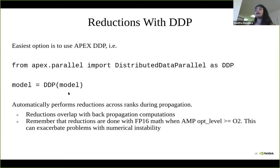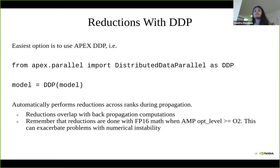DDP in the background overlaps reductions with backward propagation, improving GPU utilization. It also does FP16 reductions if you've activated AMP — instead of porting gradients to FP32 for all-reduce and back to FP16, it directly does the reductions in FP16.